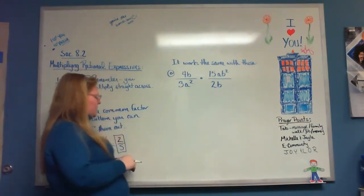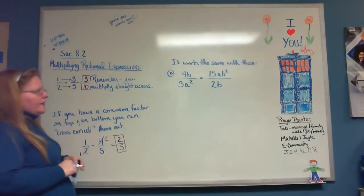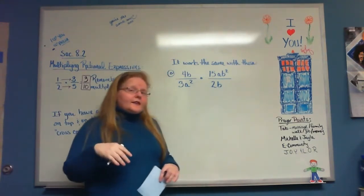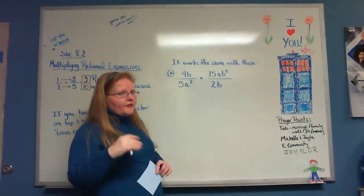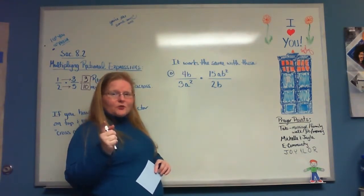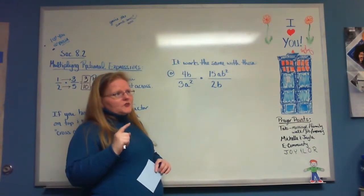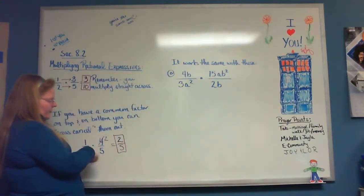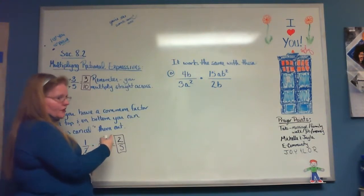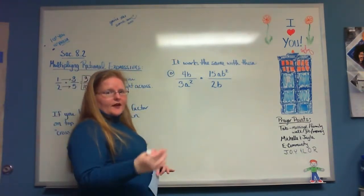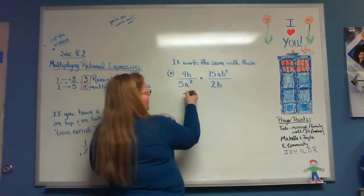The first step is to factor everything on top and factor everything on bottom. For numbers, that's not really necessary because you can look at them and see common factors. When you can see a common factor, go ahead and divide both by that factor to save yourself time from rewriting.